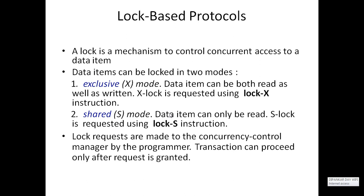The concurrency control manager checks whether other transactions continue with this lock. If that happens, the transaction never gets permission. After releasing the locks, the concurrency control manager grants permission. Lock requests are made to the concurrency control manager by the transaction, and the transaction can proceed only after the request is granted.